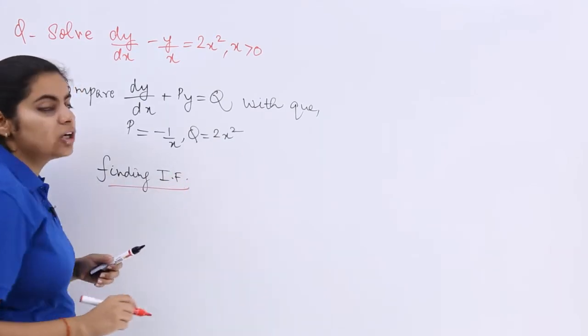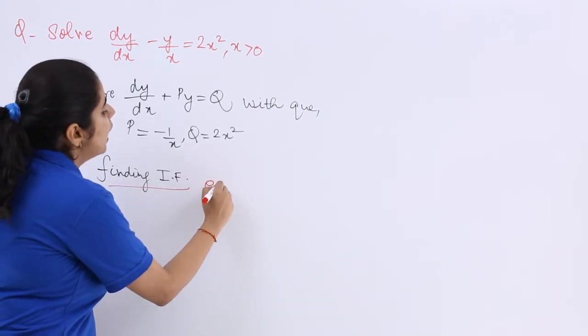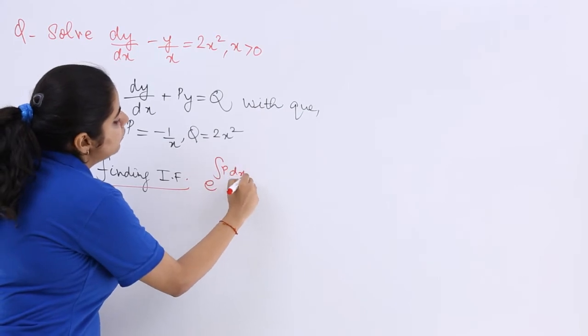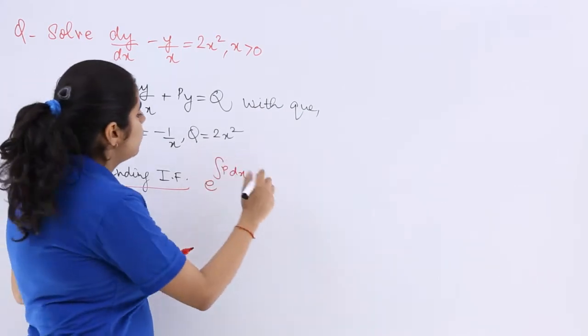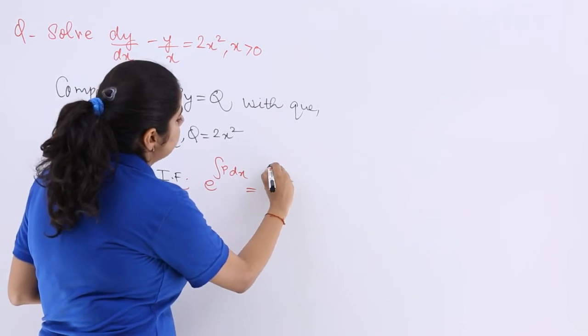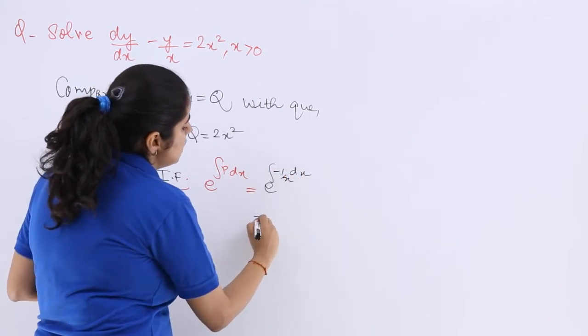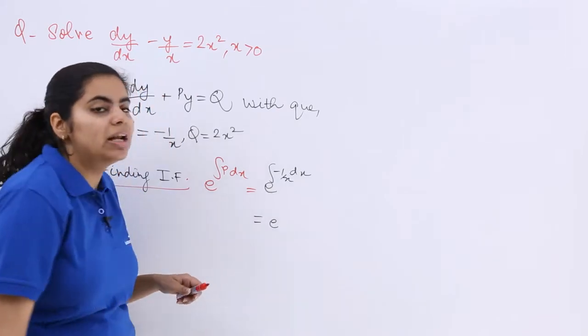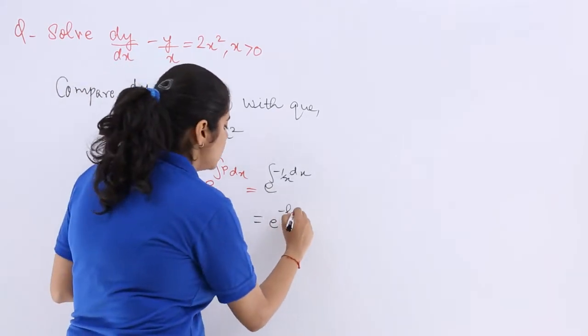Now what is the integrating factor or IF? It is given by the formula e raised to the power ∫p dx which is what? Which is e raised to the power ∫(-1/x)dx gives me log x, so minus log x.